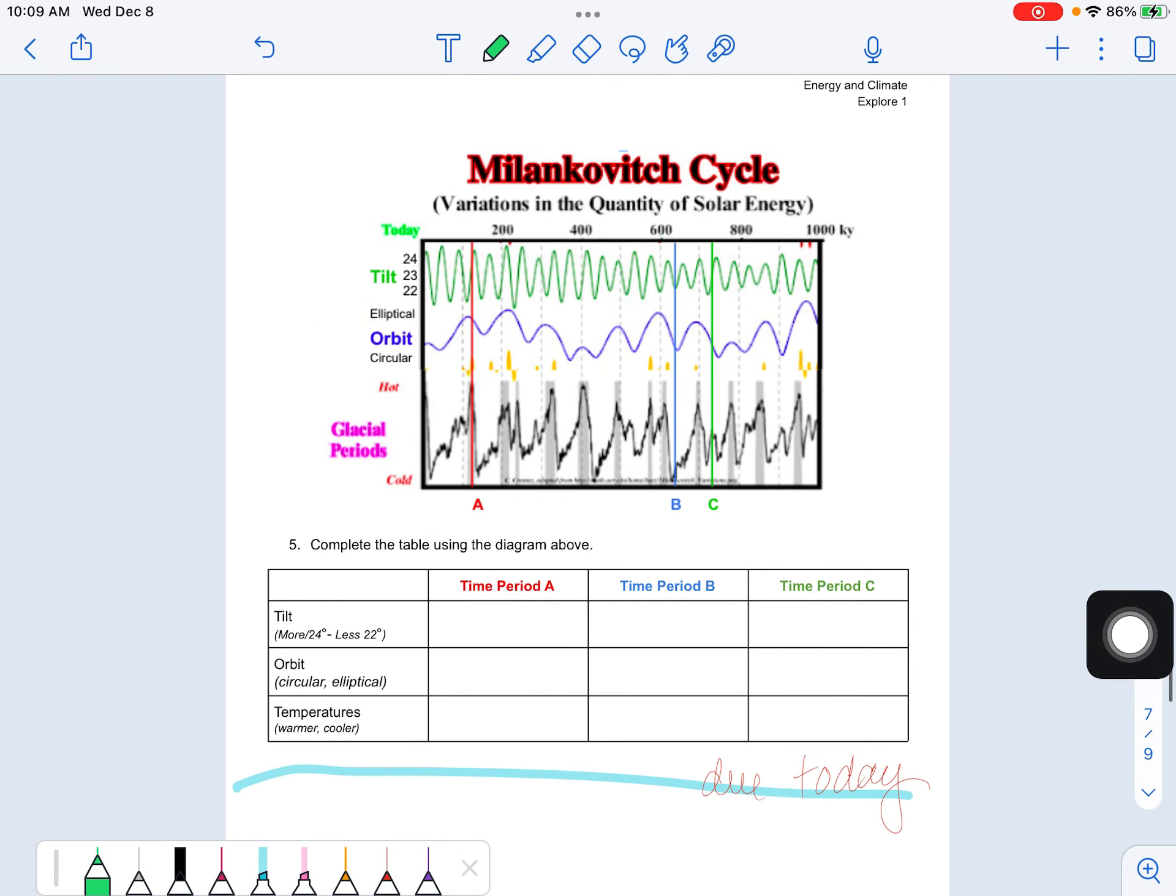And this last part here, you're looking at three areas on the graph. Time period A is the red, B is the blue, C is the green. You're just using these key words to fill in the table. So is the tilt more or less in time period A? Is the orbit more circular or elliptical? Is it a warmer time or a cooler time? Or maybe somewhere in between. So like for time period A.